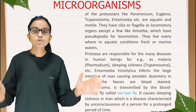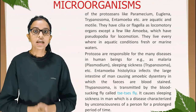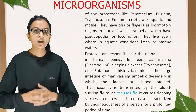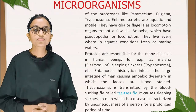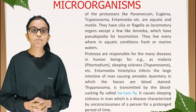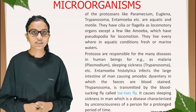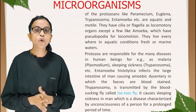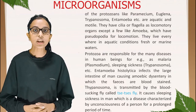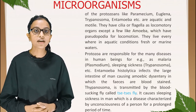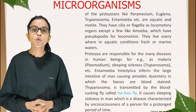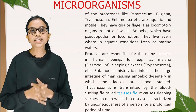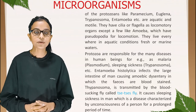Most protozoans — like Paramecium, Euglena, Trypanosoma, and Amoeba — are aquatic and motile. They have cilia or flagella as locomotory organs, except Amoeba, which has pseudopodia for locomotion. They live everywhere in aquatic conditions, both fresh and marine water.